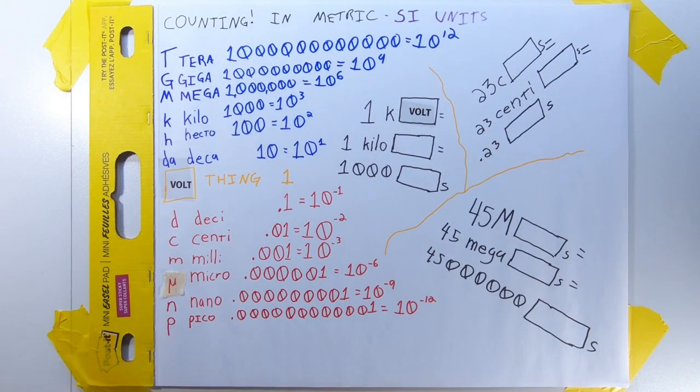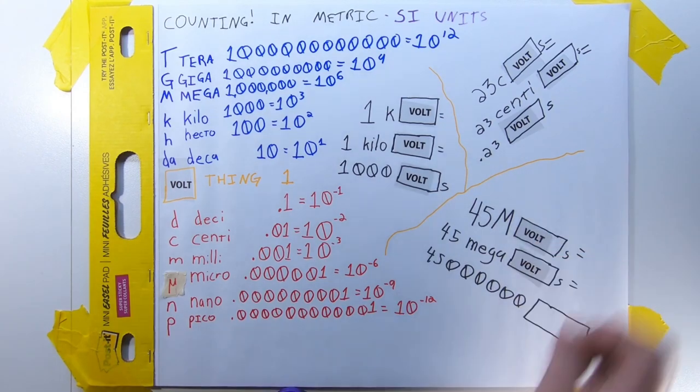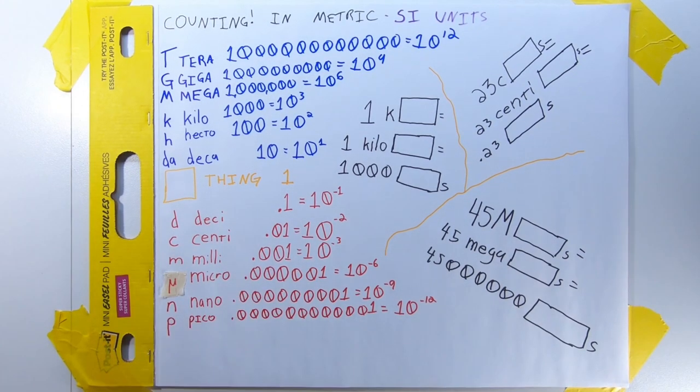Similarly, one kilovolt is 1,000 volts. Twenty-three centivolts is 0.23 volts. Forty-five megavolts is 45 million volts. In something we'll cover in a minute, one kilohertz is 1,000 hertz. Twenty-three centihertz is 0.23 hertz. Forty-five megahertz is 45 million hertz.